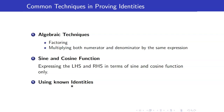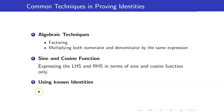Here are some of the common techniques in proving identities. Number one, we have algebraic techniques. It includes factoring or multiplying both numerator and denominator by the same expression. We also use the method of expressing the left-hand side and right-hand side in terms of sine and cosine function only. And of course, we will use previously known identities.